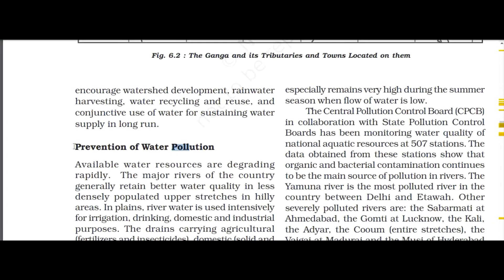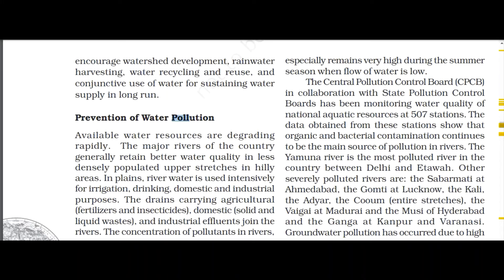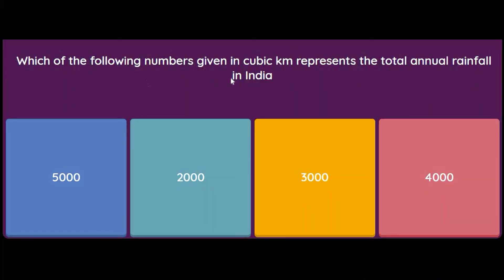Available water resources are degrading rapidly. Major rivers generally retain better water quality in less densely populated upper stretches and hilly areas. In plains, river water is used intensively for irrigation, drinking, domestic and industrial purposes. Drains carrying agricultural fertilizer, insecticide, domestic waste and industrial effluents join the rivers and pollute them. The CPCB in collaboration with state pollution control boards has been monitoring water quality at 507 stations.